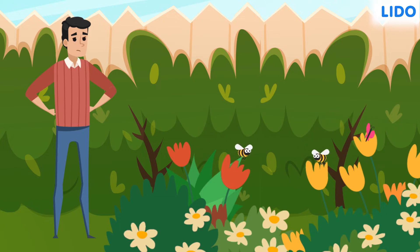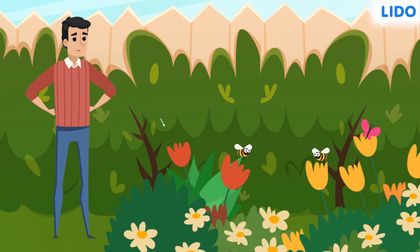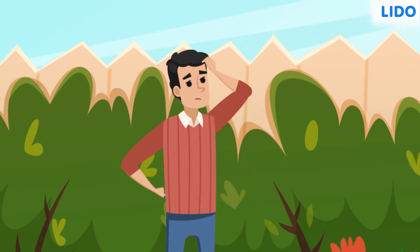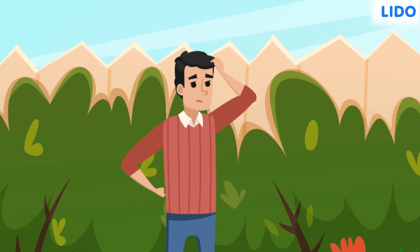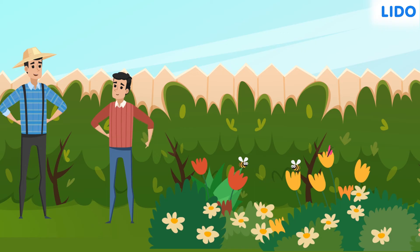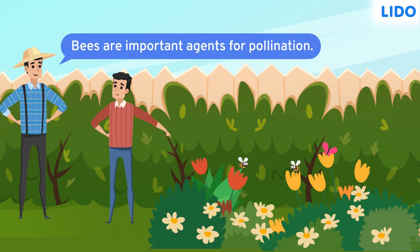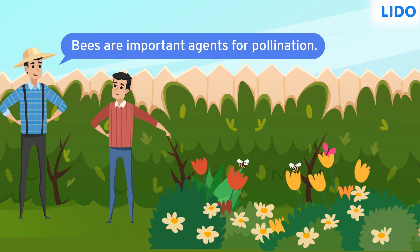But the bees never go to the small or pale looking flowers. They are just attracted to large and beautiful flowers. He wondered why this was, and went to ask his father about it. His father said that bees and other insects are important agents of pollination.